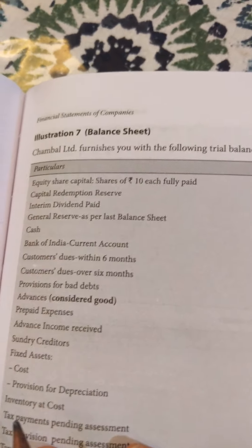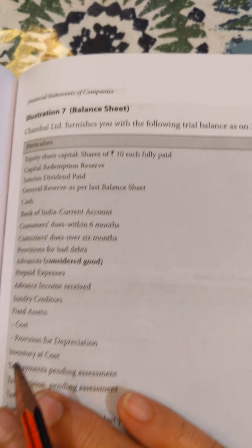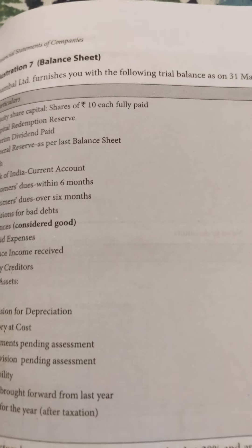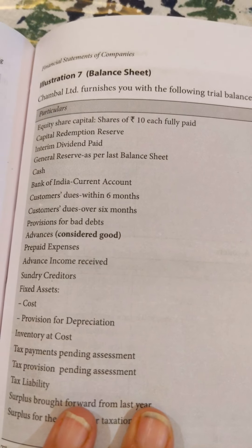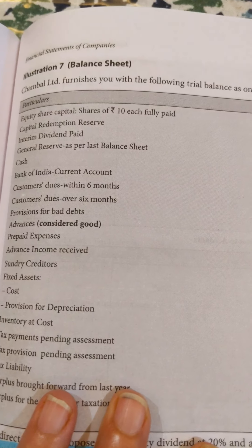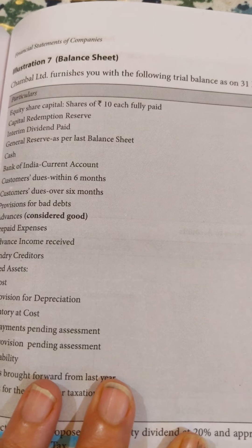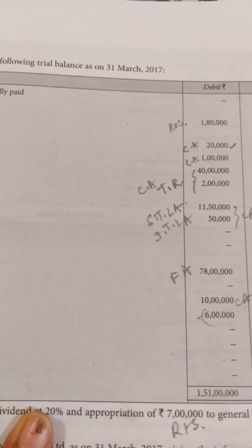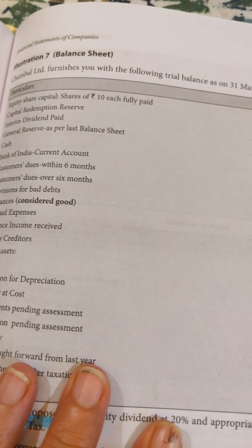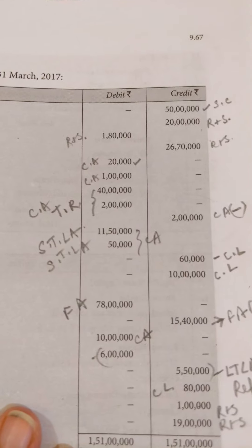Hello friends, today we are going to do one illustration relating to final accounts. This will be a full-fledged or comprehensive illustration containing the balance sheet. This is illustration 7, which says Chambal Limited furnishes you with the following trial balance as on 31st March 2017. Equity share capital — shares of rupees 10 each, wholly paid — 50 lakh rupees.